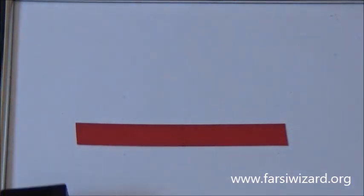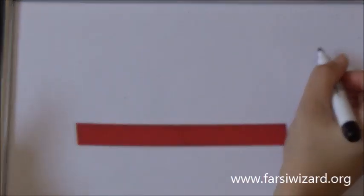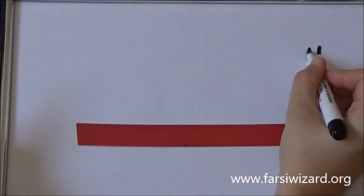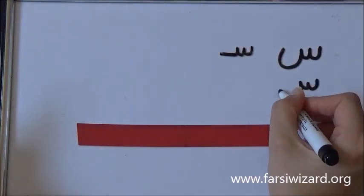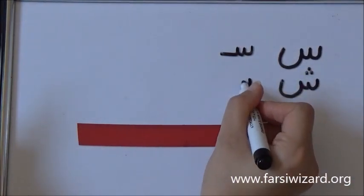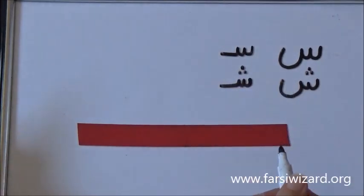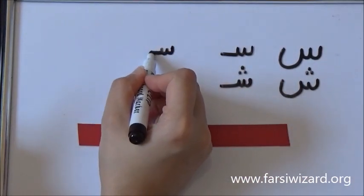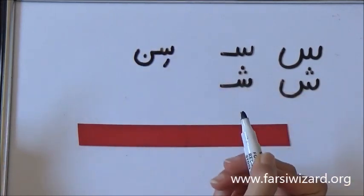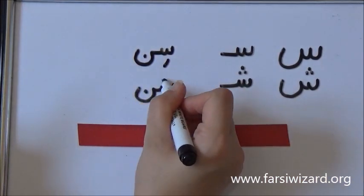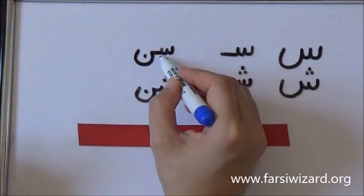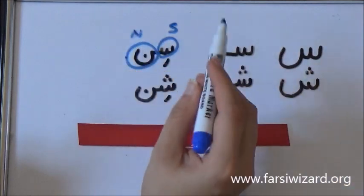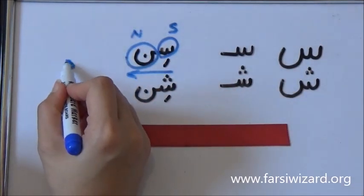Now we're going to see how these letters are used in words. Just one more time. Really quickly, you can see a summary of what we have learned so far. A good example, a good word that you can look at is the word sen and shen.